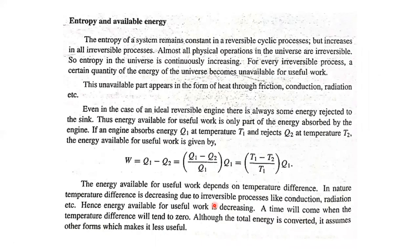Entropy and available energy. Almost all physical processes in the universe are irreversible, so entropy in the universe is continuously increasing. For every irreversible process, a certain quantity of energy in the universe becomes unavailable for useful work. The unavailable part appears in the form of heat through friction, conduction, radiation, etc.